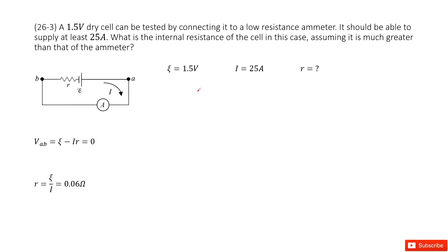So here we consider a dry cell battery, and we know its emf is 1.5 volts, connected to a low resistance ammeter. So now you can see this battery connected with the low resistance ammeter.